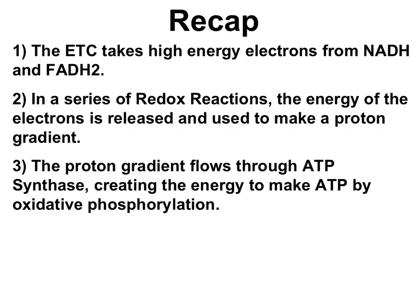The electron transport chain takes high-energy electrons from the NADH and FADH2 generated by earlier steps of cellular respiration. The electron transport chain is a series of redox reactions where the energy of the electrons is released in little bits at a time, and that energy is used to generate a proton gradient. The proton gradient flows through ATP synthase, creating energy to make ATP by oxidative phosphorylation. Together, the generation of the proton gradient and its subsequent collapse through ATP synthase is called chemiosmosis.